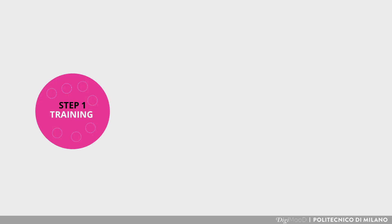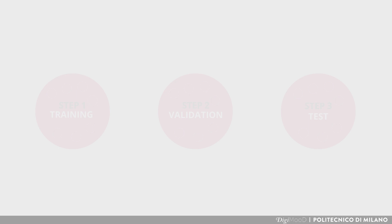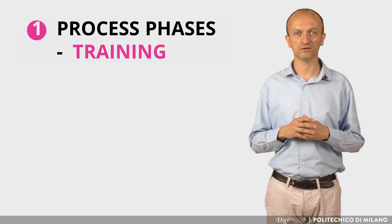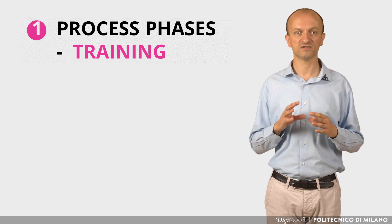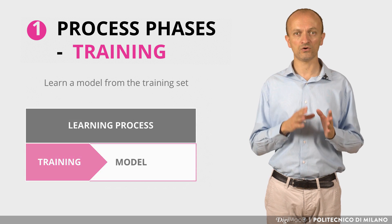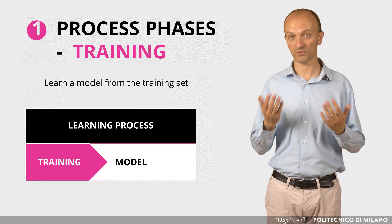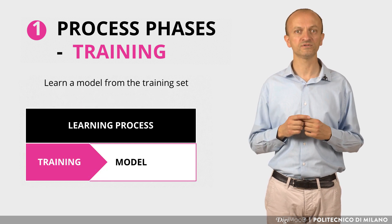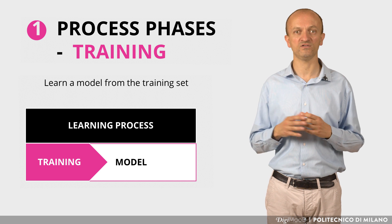An important terminological aspect related to machine learning is the way in which the various steps and data sets involved in the process are defined. Now we will define the concepts of training, validation and testing. We talk about training when we define the phase in which the algorithm learns from the data, and from possible examples, to understand how to behave in the future.